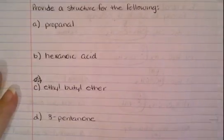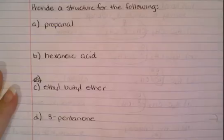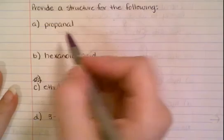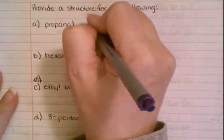We want to draw structures for the indicated organic compounds that include a functional group. The first thing you want to do is identify which functional group each one of these compounds has. We notice on the first one it has NAL, so this tells us this is an aldehyde.